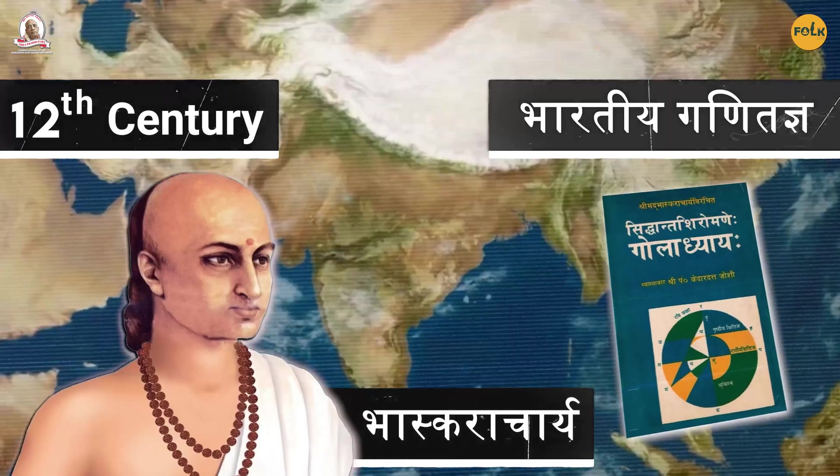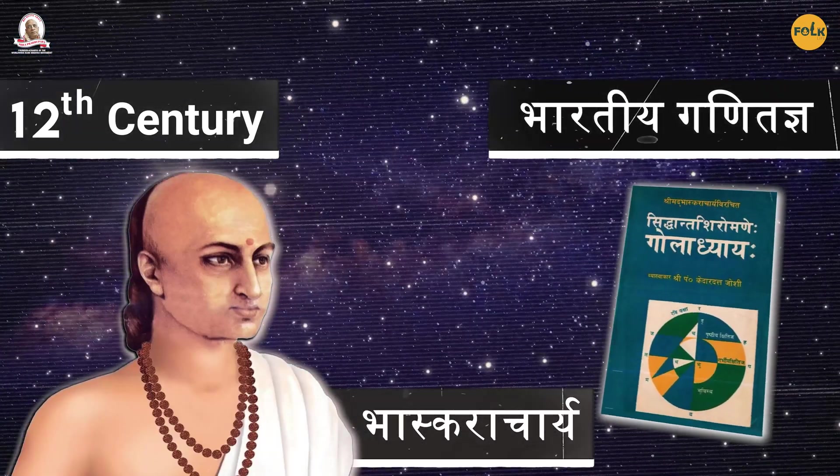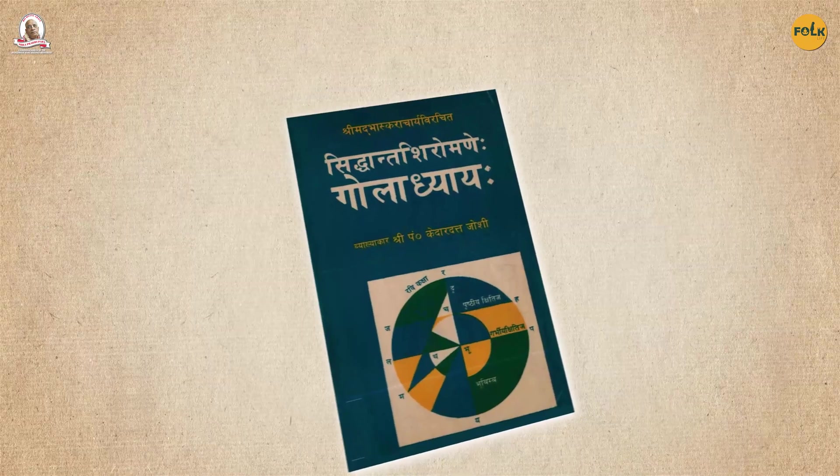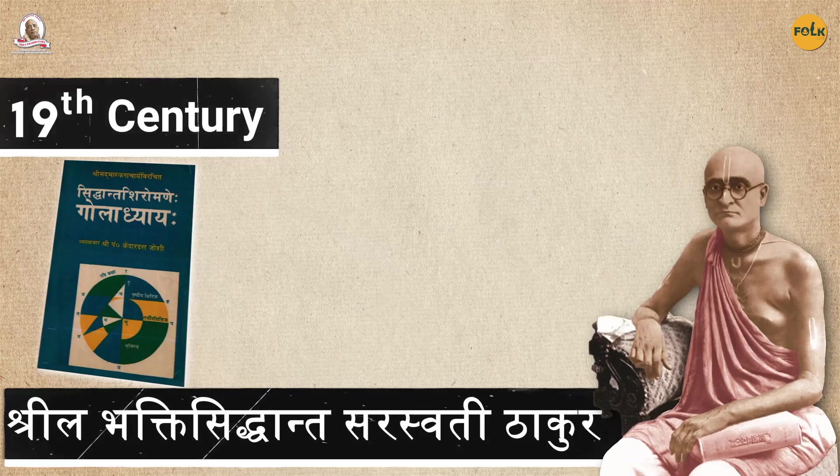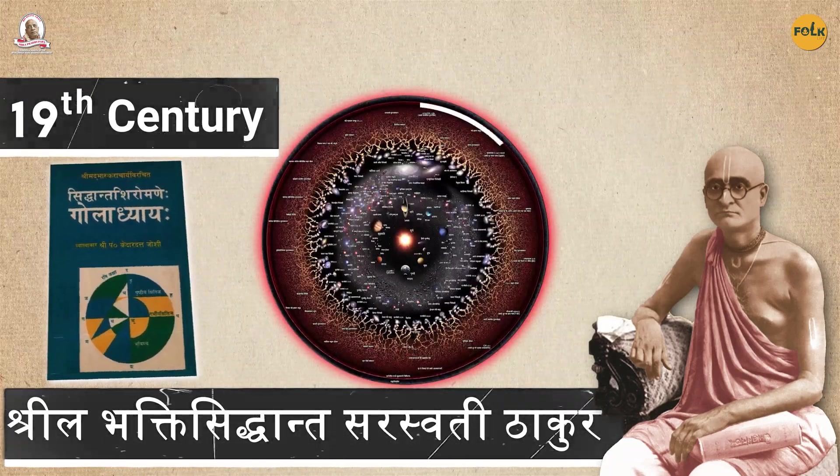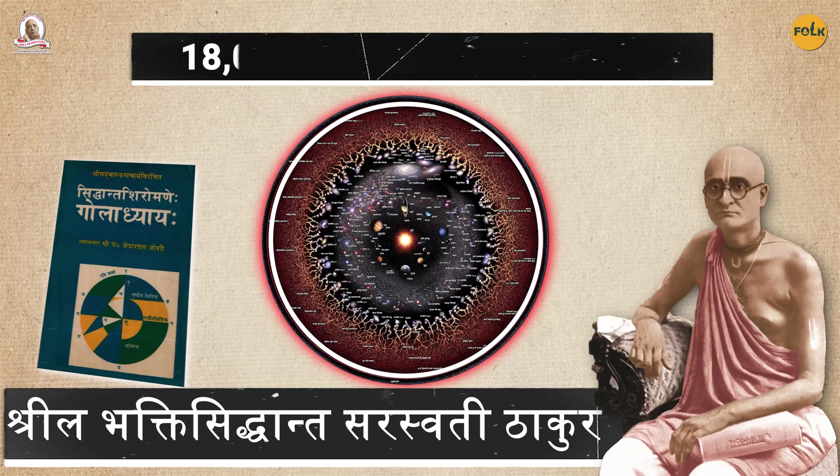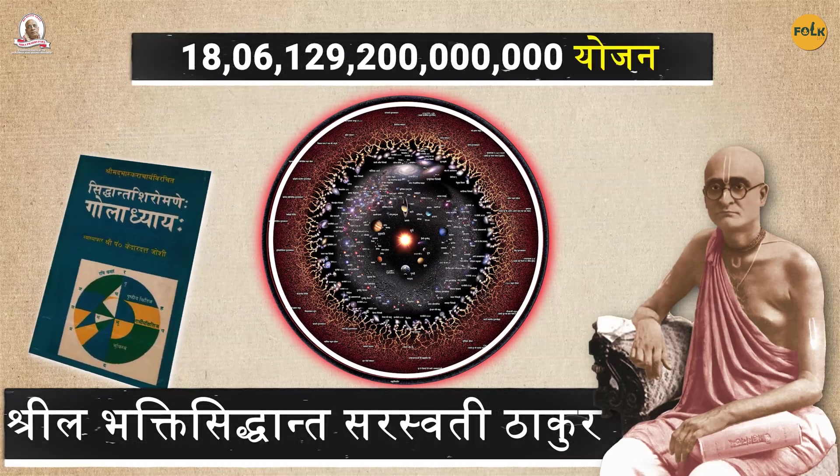in the third volume, Goladyaya, of his book Siddhanta Shiromani, gave detailed information about the universe's size. This chapter was translated in the 19th century by the great astrologer Srila Bhaktisiddhanta Saraswati Thakur,